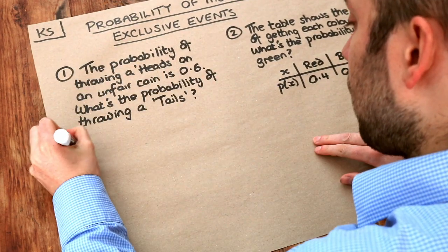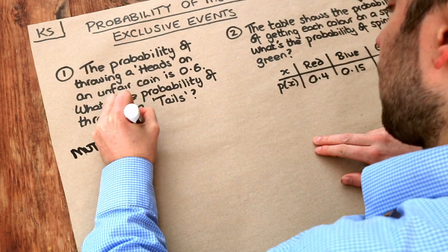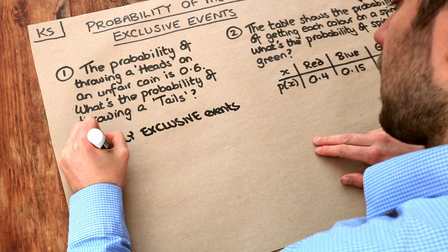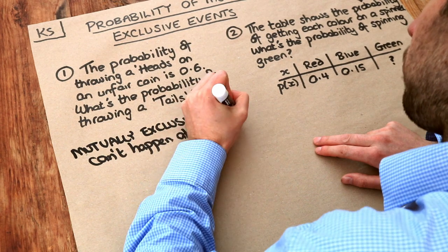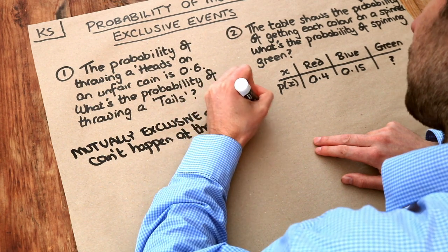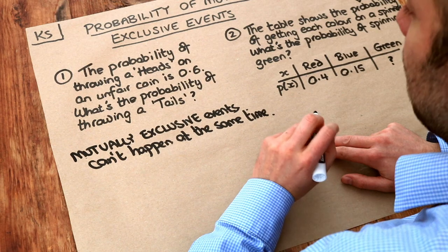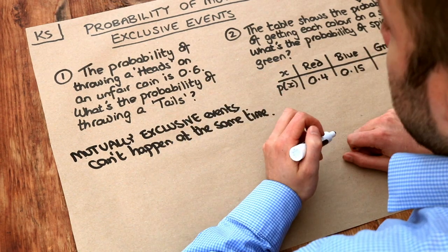So let's write that down. Mutually exclusive events can't happen at the same time. And what do I mean by an event? An event is just some particular outcome that happens or collection of outcomes that happen.